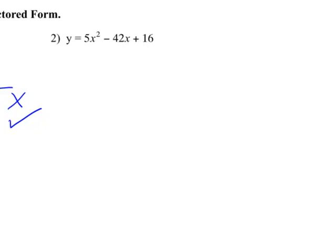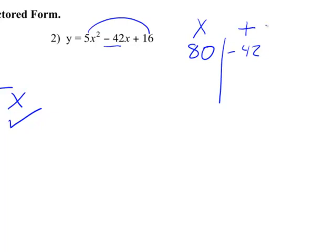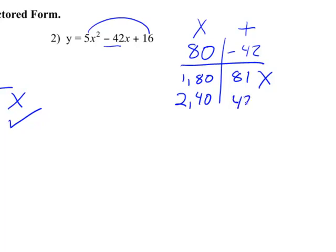But I can still use the rainbow method. The rainbow method says take my first times my last — my a times my c — which gives me 80. Then take my b value, negative 42. I need two numbers that multiply to be 80 and add to be negative 42. Starting with 1: 1 times 80 is 80, and 80 plus 1 is 81 — that didn't work. Trying 2: 2 times 40 gives me 80, and 2 plus 40 equals 42 — that worked almost, but it needs to be negative 42. So I change the signs: negative 2 and negative 40 gives me negative 42. That worked.